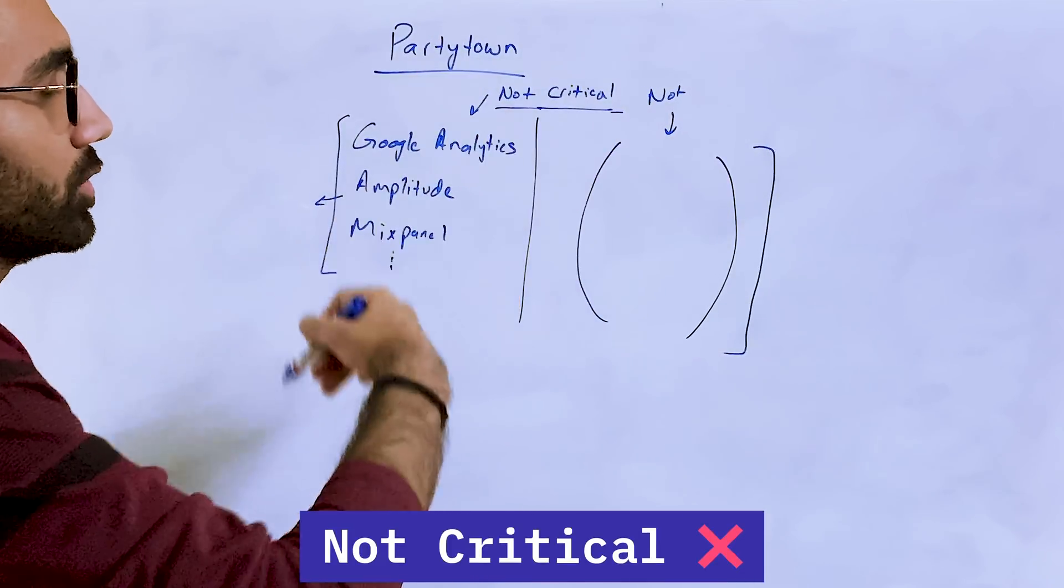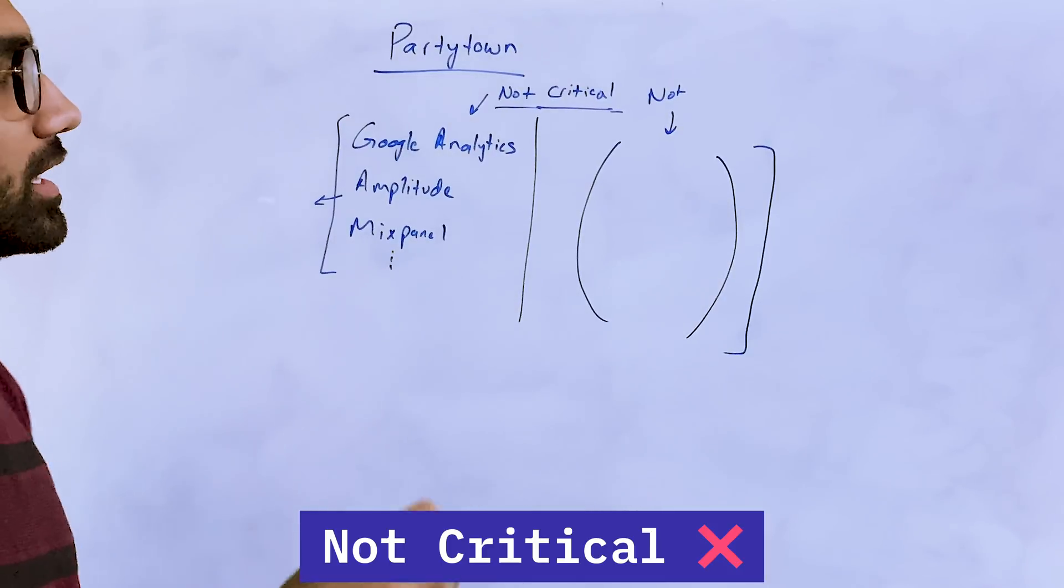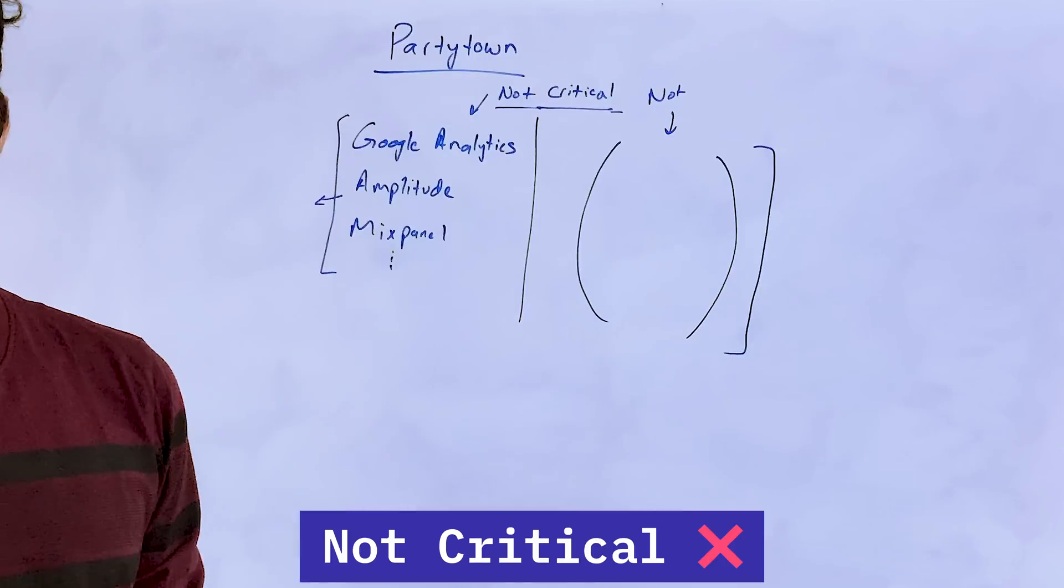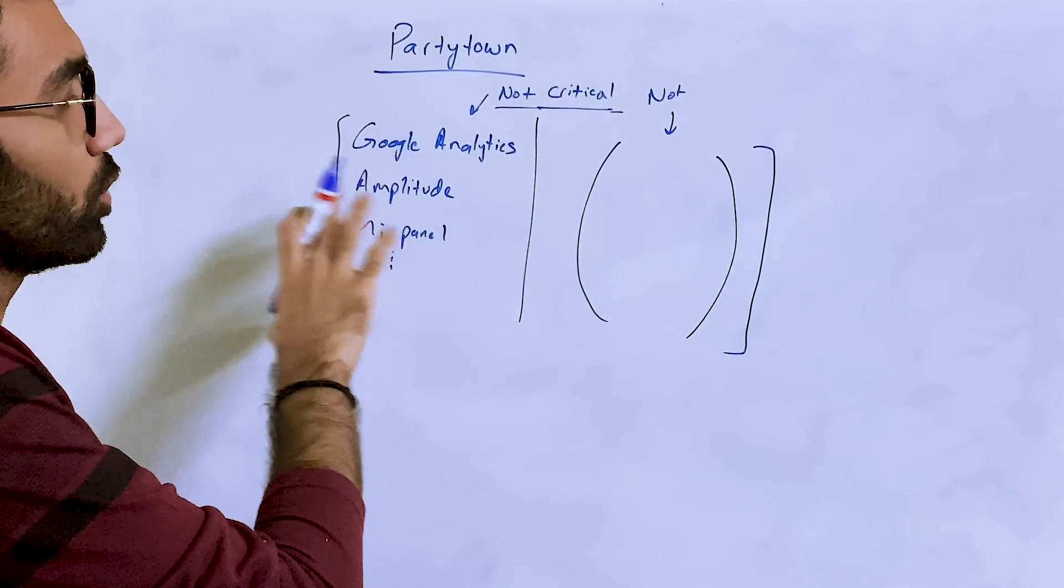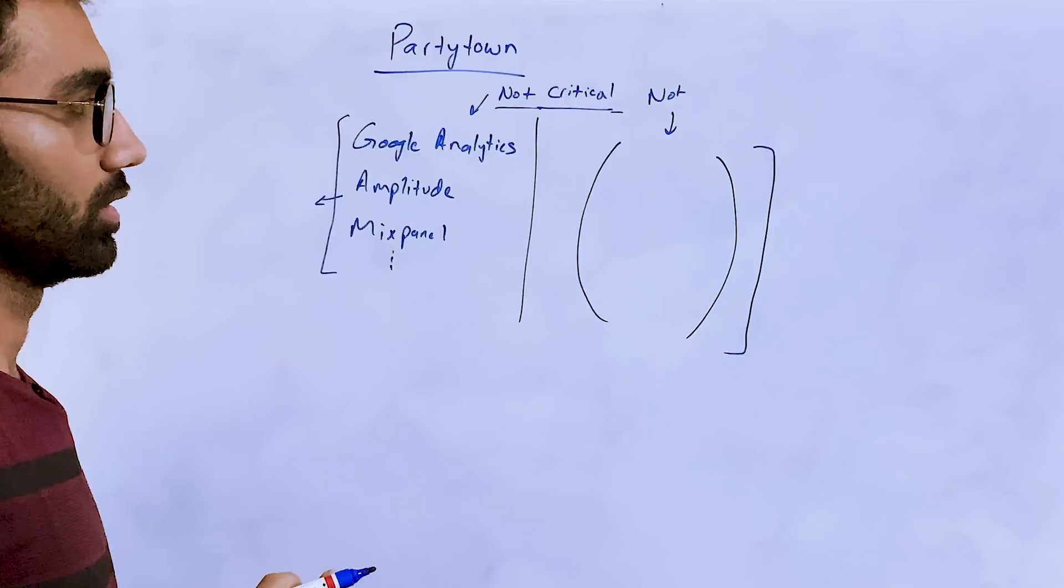What does this mean? This means that they are not critical to the functioning of your app. So even if they are running a little bit throttled or a little slower it wouldn't matter, but it will be great if they don't run at main thread at all.